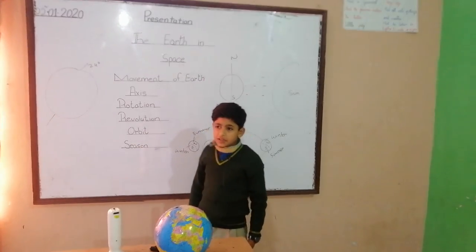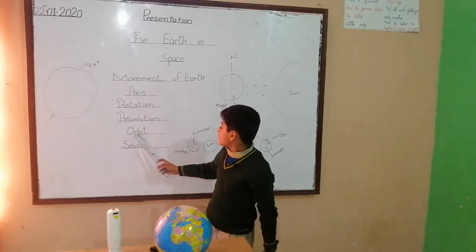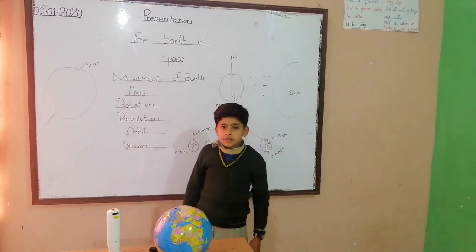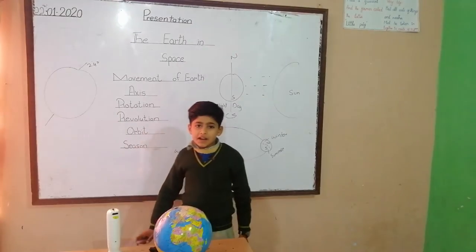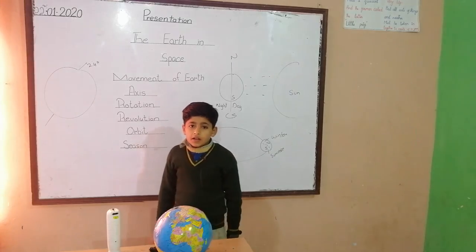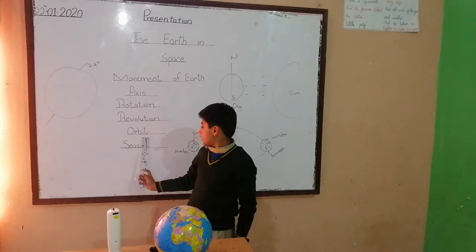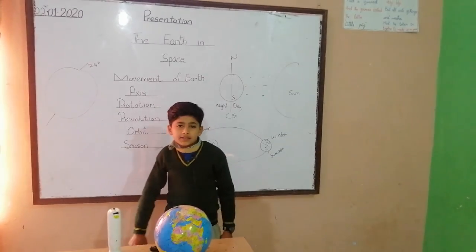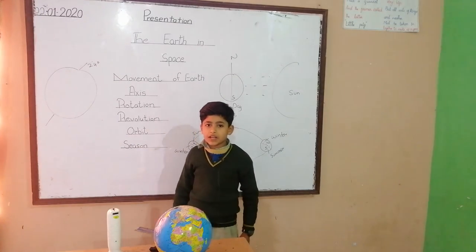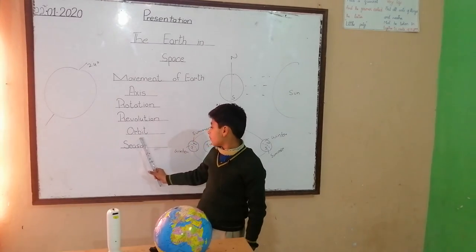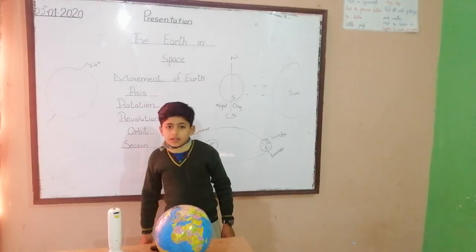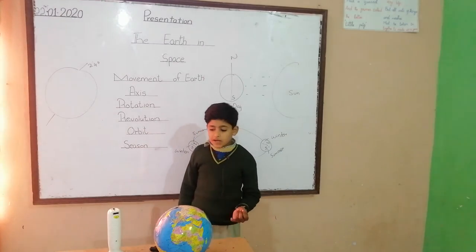Next, Orbit. The Earth revolves around the Sun, and the Moon revolves around the Earth, on a fixed path. This fixed path is called the Orbit. There are four types of seasons: summer, winter, autumn, and spring.